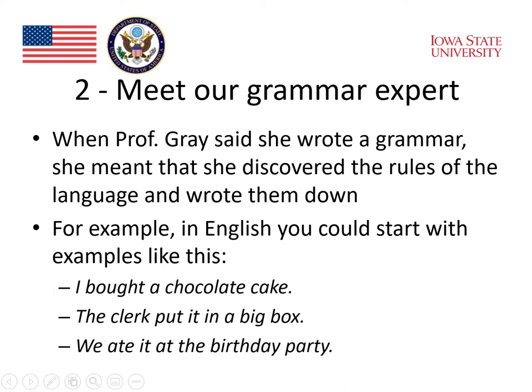When Professor Gray said she wrote a grammar, she meant that she discovered the rules of the language and wrote them down. For example, in English, you could start with examples like this: I bought a chocolate cake. The clerk put it in a big box. We ate it at the birthday party. These are examples of sentences in English, and so how can we write a grammar that describes those sentences?